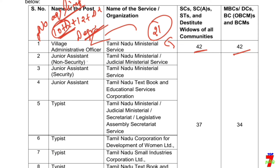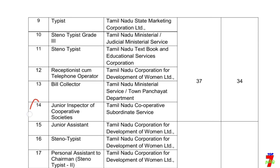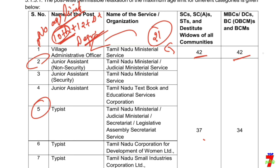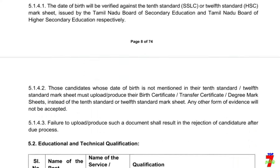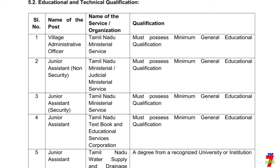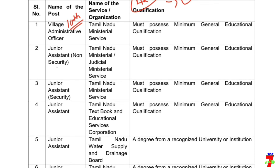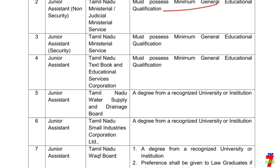The junior assistant — you can get a qualification in the same way. You can get 12th or degree in the same way. You can get a certificate in the same way. Now, if you get a qualification, you can get a 10th year pass. The junior assistant qualification is 10th.